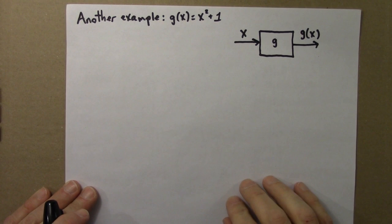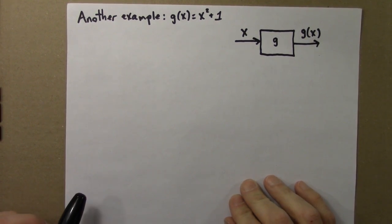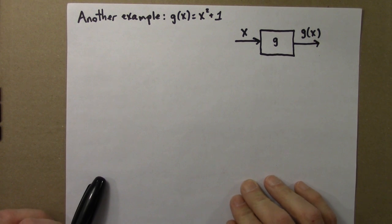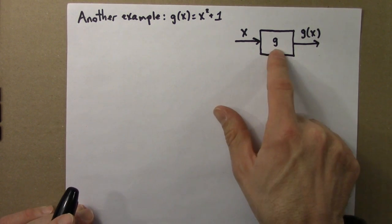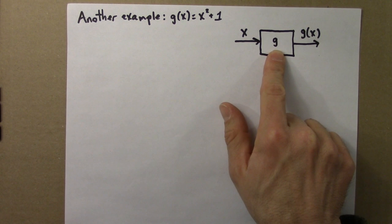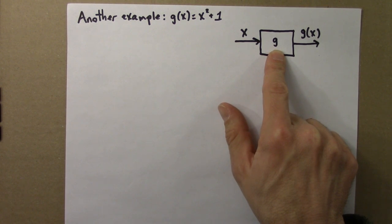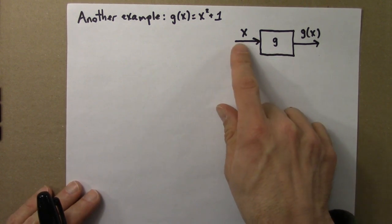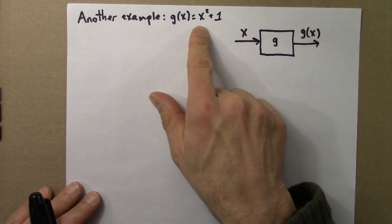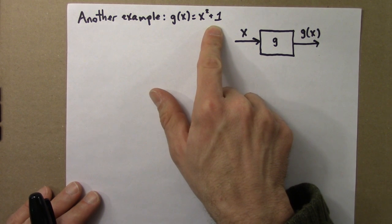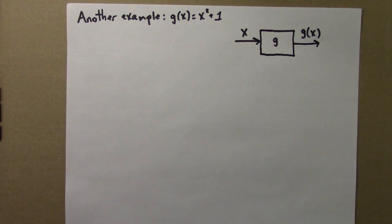Let's do another example. This time the function, I'll call it g, will be x squared plus 1. So remember, a function is an action. It takes a number as input, it does something to it, and it gives an output. We specify the function by saying what that action is. What rule does it follow to go from the input to the output? In this case, the rule is take the input number, square it, and add 1.